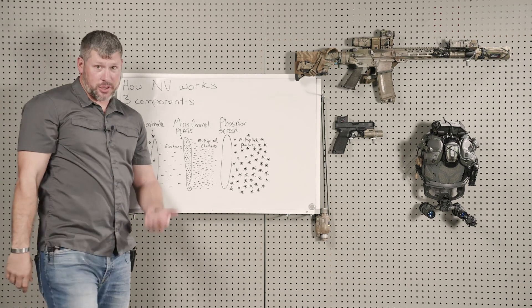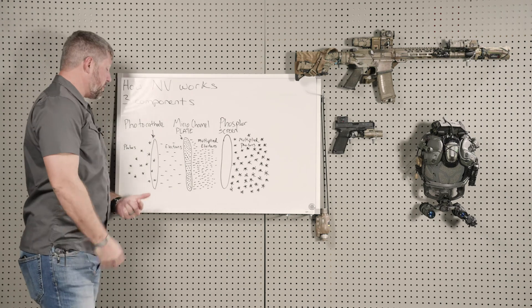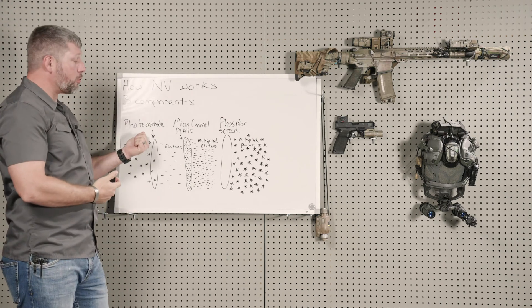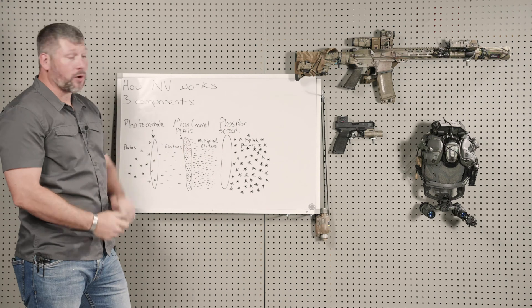This is an intensifier tube. Doesn't matter, doesn't work. Anyways, within that tube, you have a photocathode, a microchannel plate, and a phosphor screen.